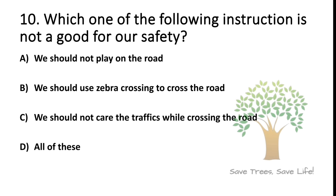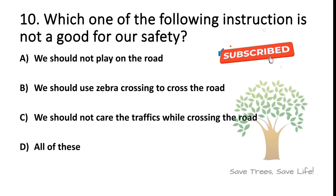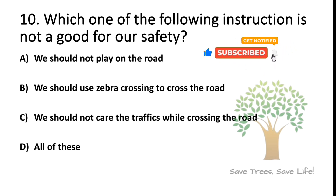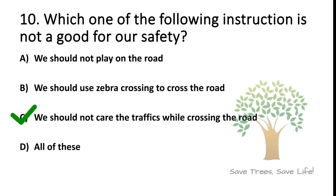Question number 10. Which one of the following instructions is not good for our safety? Option A: We should not lay on the road. Option B: We should use zebra crossing to cross the road. Option C: We should not care about the traffic while crossing the road. Option D: All of these. So the answer is option C.